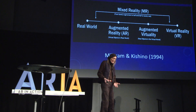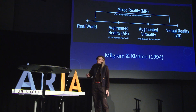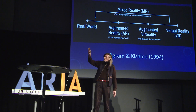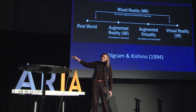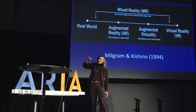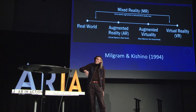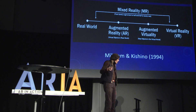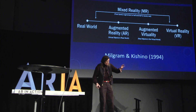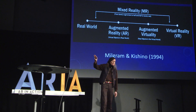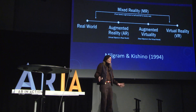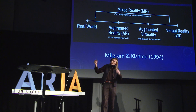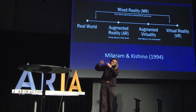So Milgram and Kashino were particularly looking at this broader issue of real world versus virtual world. But the middle part is where it's interesting. Augmented reality — we've talked about that today. You haven't heard anybody talking about augmented virtuality, which is the inverse of that: virtual objects in the real world versus real objects in the virtual world. It turns out they're both equally important, particularly when you're trying to teach. This whole thing is converging in the middle.